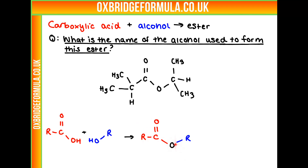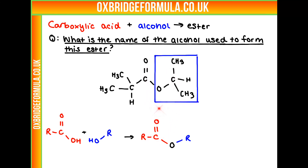If we compare this to the ester we have here, which part is going to represent the alcohol? It's going to be the section that does not have a C=O bond — this section here in a box. Obviously, this bond is going to be replaced by an H to form our alcohol.